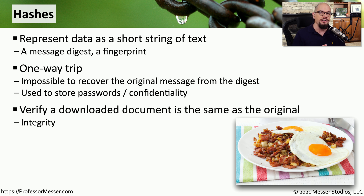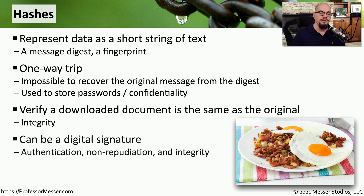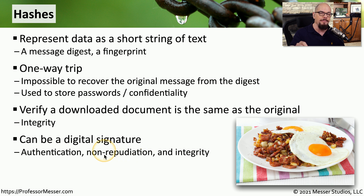We can often use hashing to provide integrity. We can take a hash of a file, copy that file somewhere else, perform that same hashing algorithm, and then compare the hashes on both ends. If the hashes are identical, then the copied file is exactly the same as the original. We also use hashing in combination with encryption to create digital signatures, which provide authentication — telling us where the data came from — non-repudiation, meaning we can tie it back to a specific person, and of course integrity is still part of that hashing algorithm.